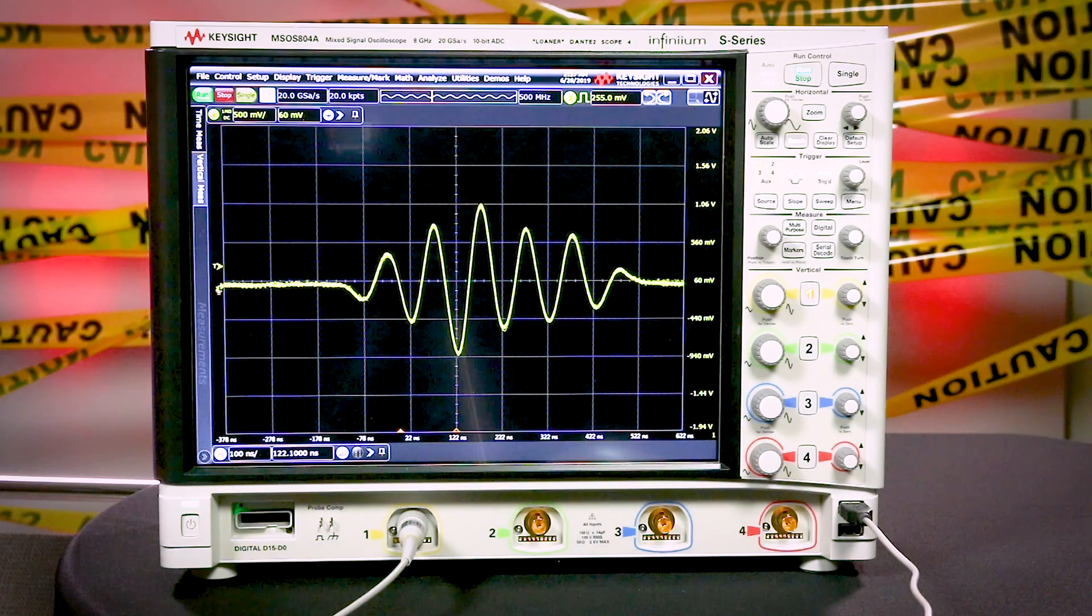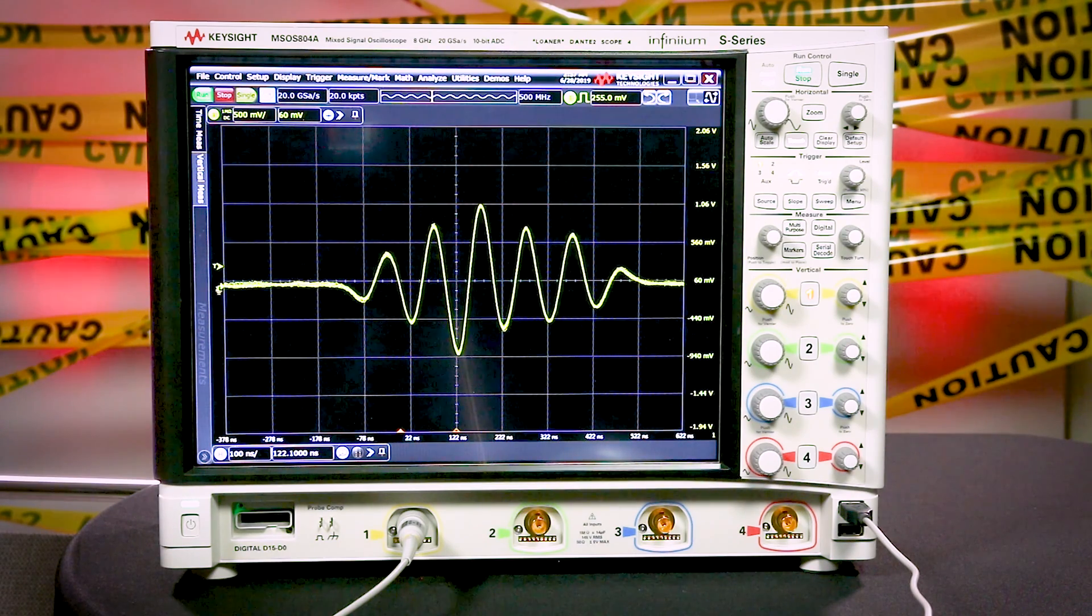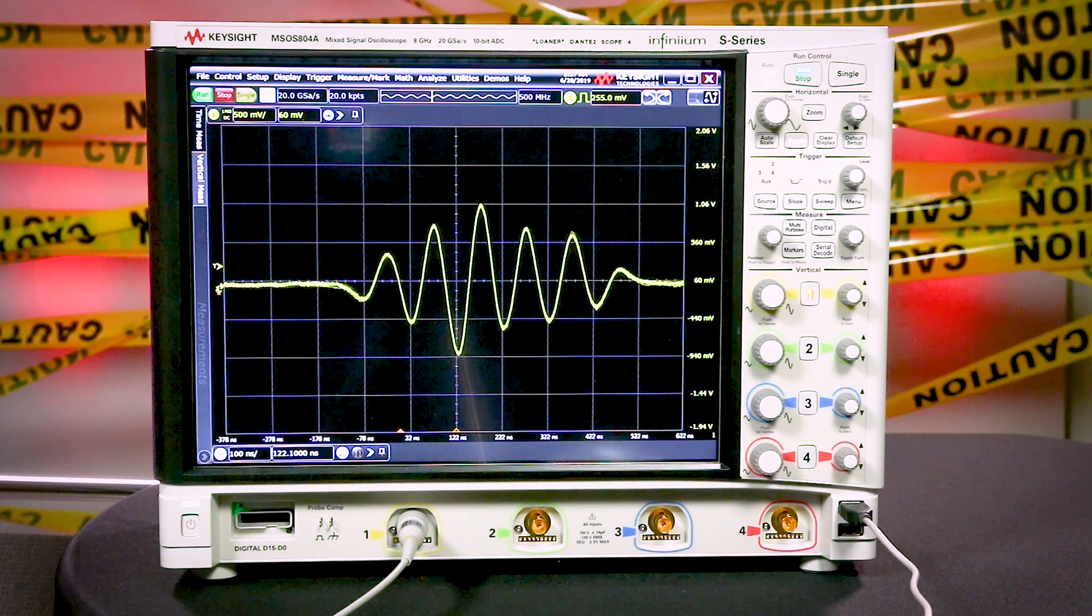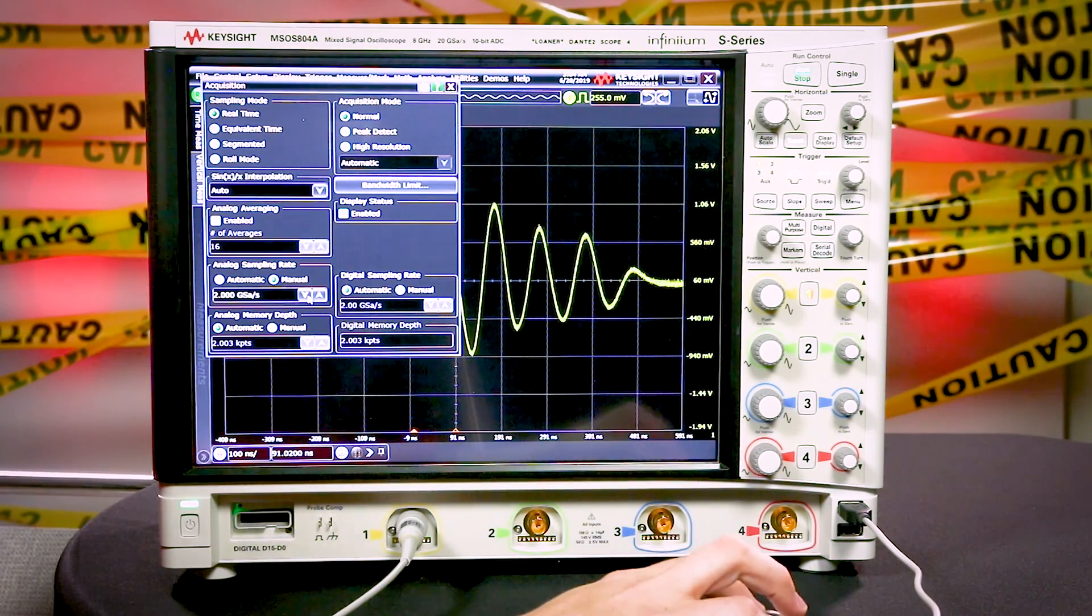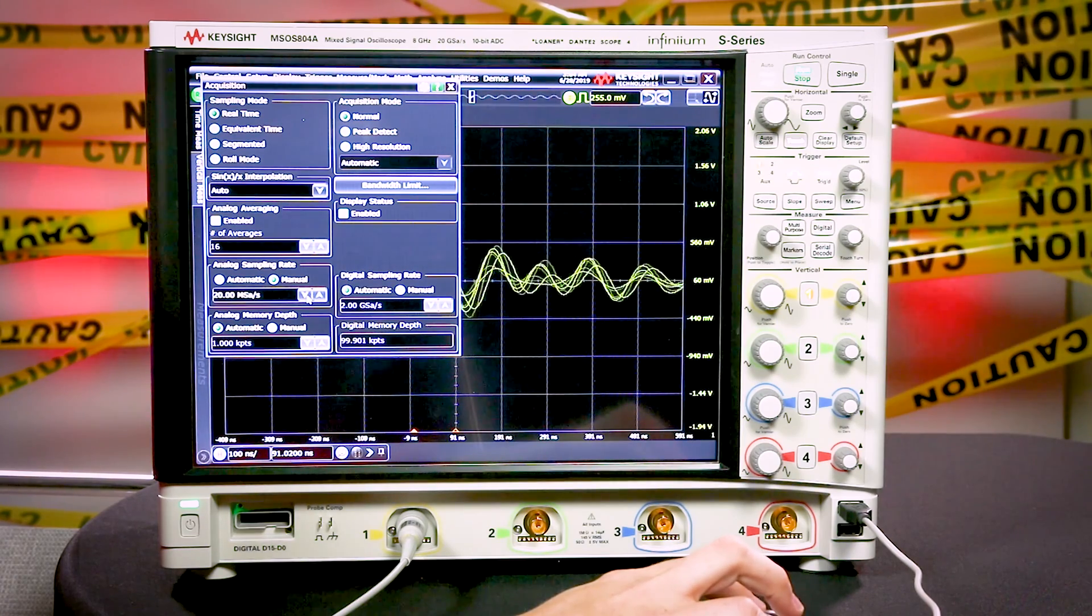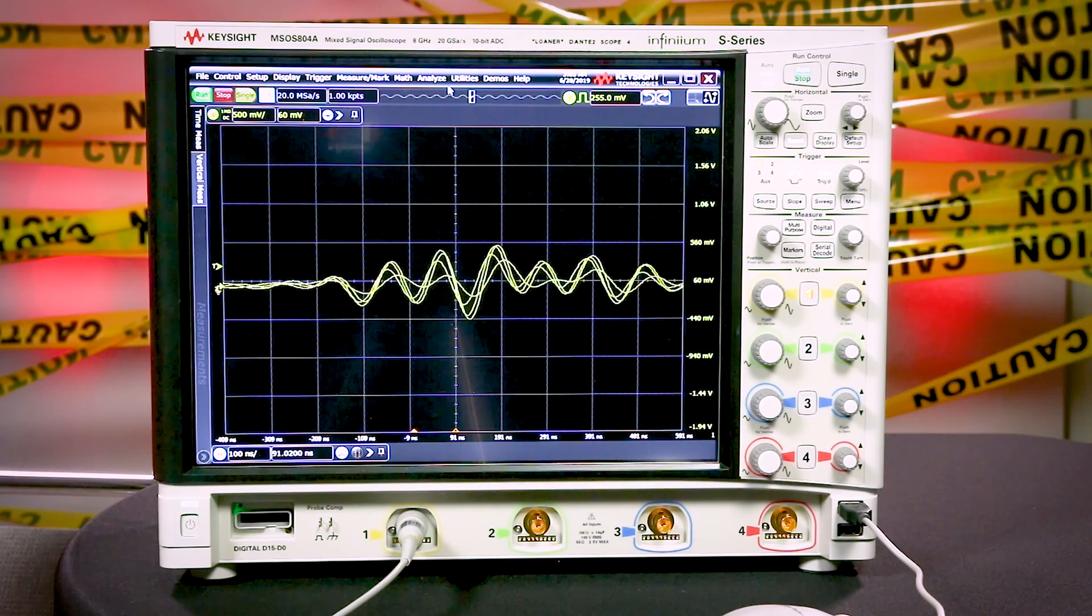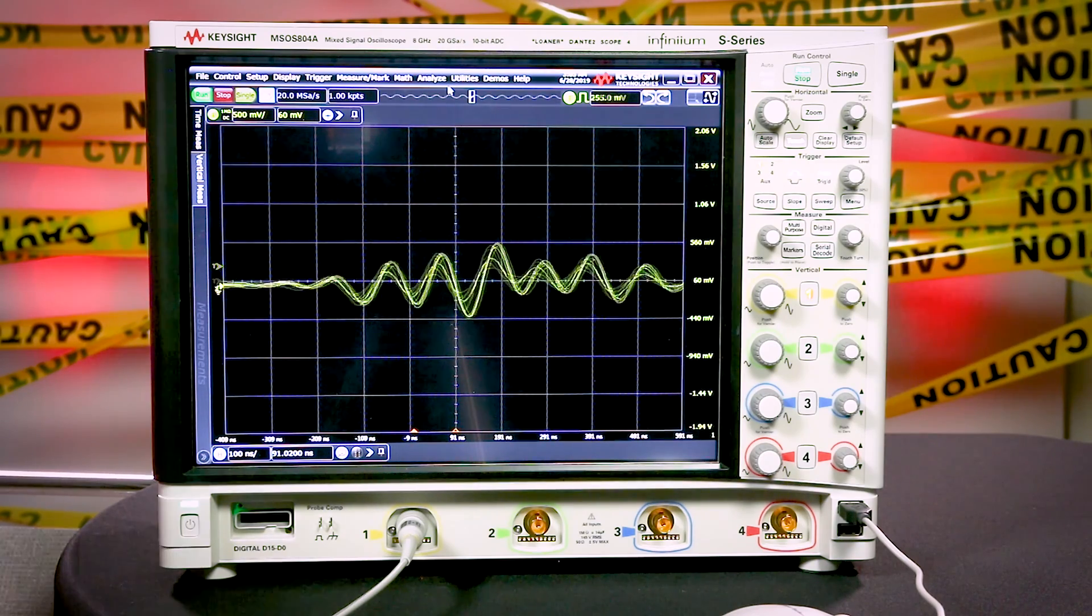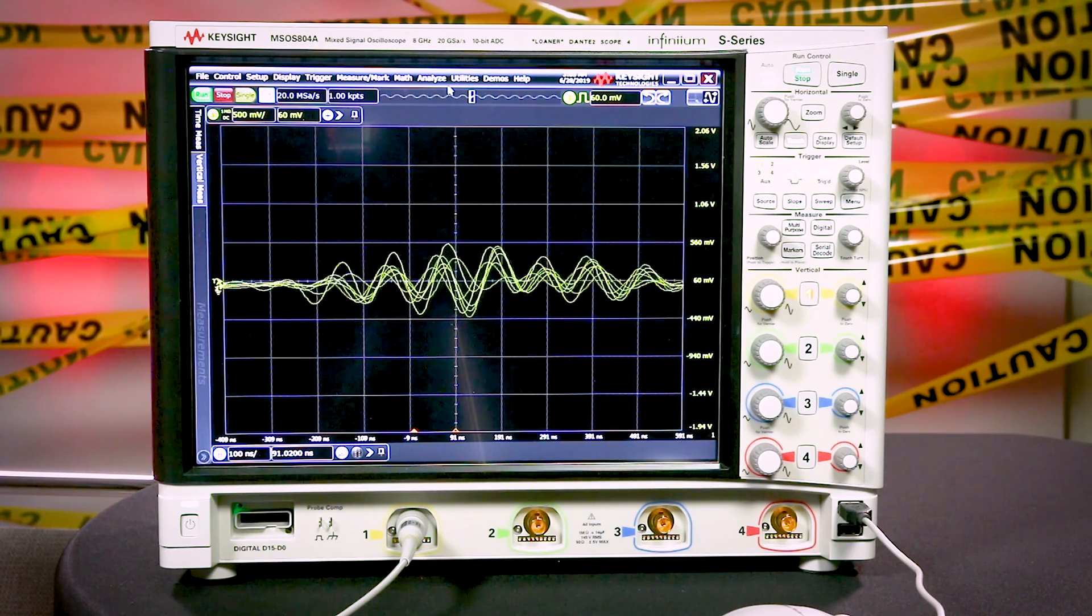So what does all of this mean to your measurements? Let's take a look at what a signal looks like with a high sample rate versus a low sample rate. You can see with the high sample rate of 20 giga samples per second, we see a nice smooth representation of our signal and can make accurate measurements on it. With a low sample rate of 20 mega samples per second, we can see that the signal looks distorted because there are not enough samples available to correctly interpolate the waveform. If you were to perform a peak-to-peak measurement on this, your results would be completely inaccurate.